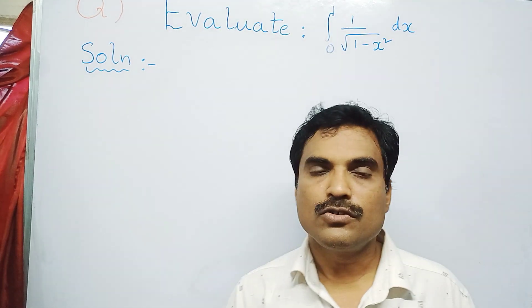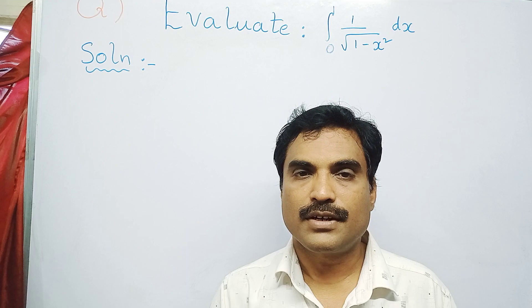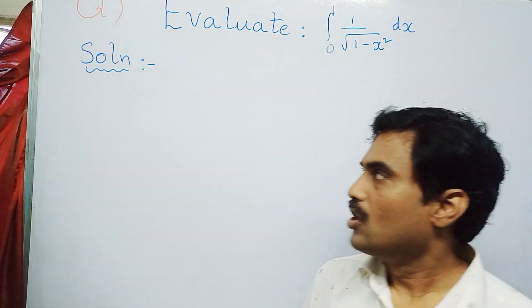To solve this problem, you need to use the formula: integral 1 by root 1 minus x square dx is nothing but sine inverse x. Then you have to apply the limits to get the final solution.